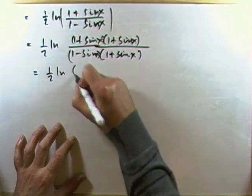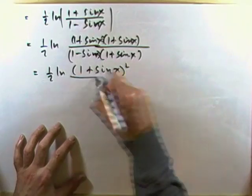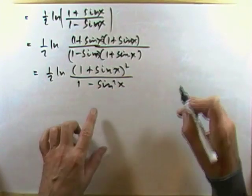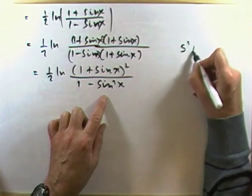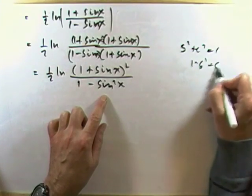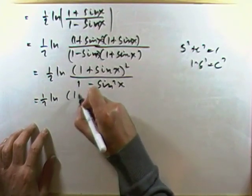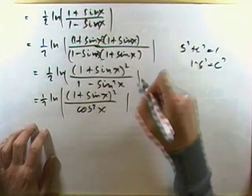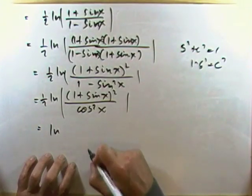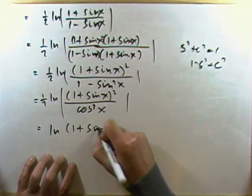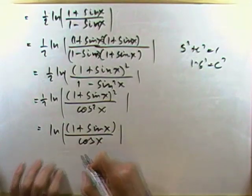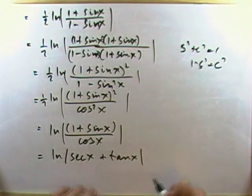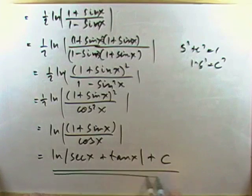So I've got a half of ln of the top being 1 plus sin x squared, and the bottom being the difference of two squares: 1 squared minus sin squared x. Using cos squared x plus sin squared x equals 1, we get 1 minus sin squared x equals cos squared x. So I have a half of ln of 1 plus sin x all squared over cos squared x. Taking the square root, that's ln of 1 plus sin x over cos x. And since 1 over cos x is sec x and sin x over cos x is tan x, the result is ln of sec x plus tan x, plus c.